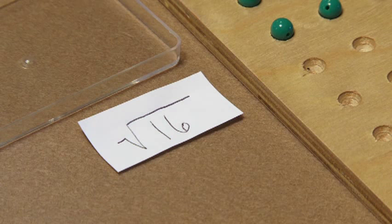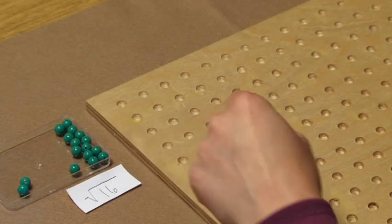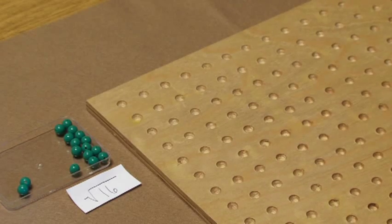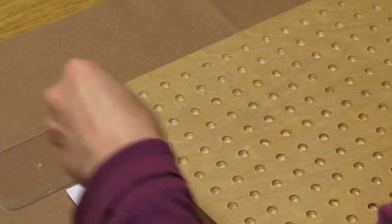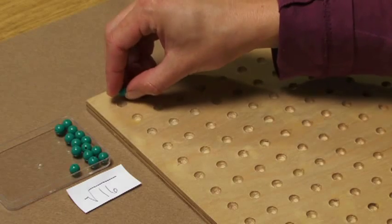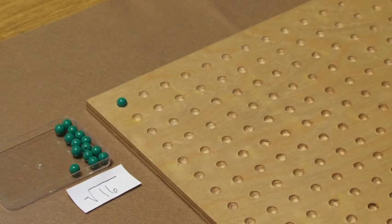To find the square root of this number, we're going to be using our beads on this pegboard. Each time that we place a bead in the board, we're going to need to keep our square.